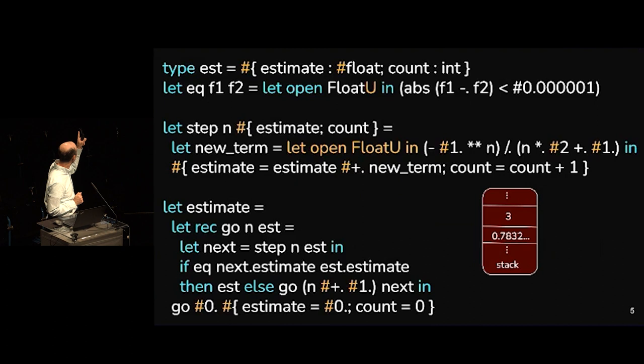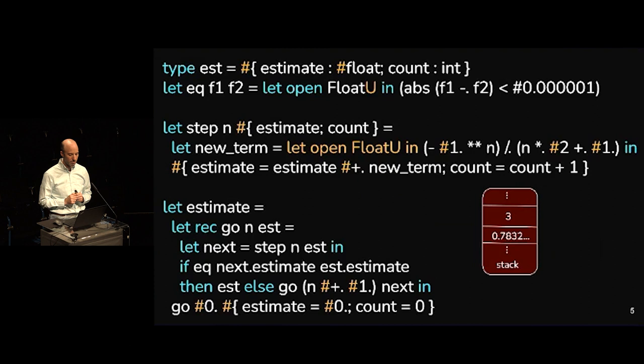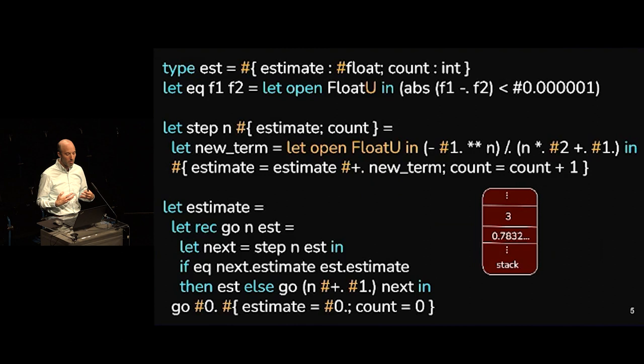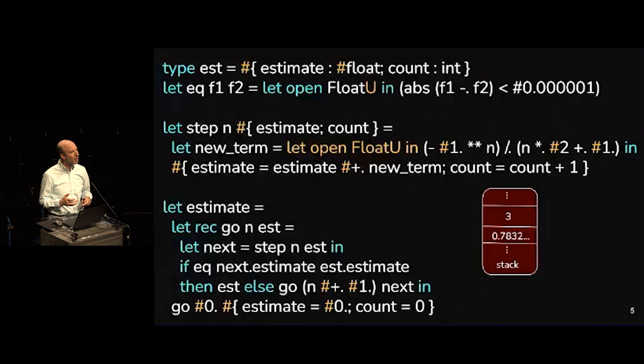I've improved this in two separate ways and we could choose one or both. The first is that I've made an unboxed record — that's the first hash mark in the type definition for est. Second, I've unboxed the float — that's the hash mark in front of the float. These are two independent optimizations. In the equality comparison function eq, instead of opening float I have a hypothetical new module Float_u that imports operations from a module working over unboxed floats, because hash float is a different type than float.